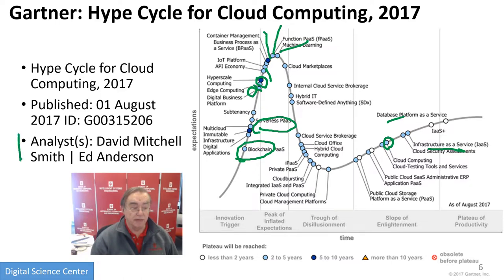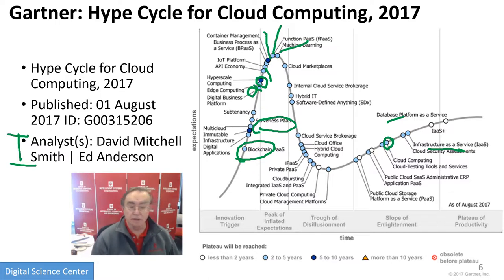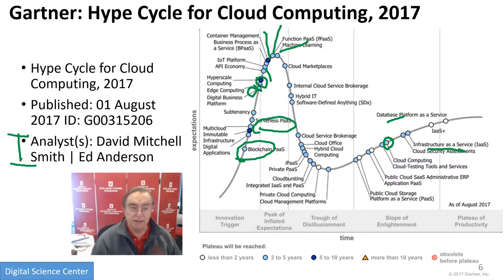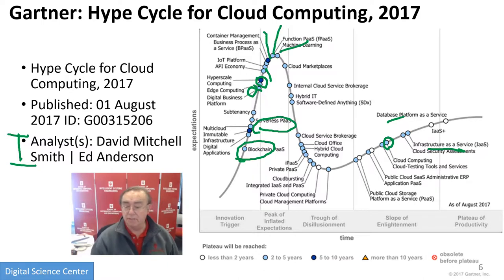I actually noticed these are from different analysts — the emerging technologies one is called Walker. They're published at the same time, and I assume Gartner is aware of the possible inconsistency that cloud computing appears in one hype cycle on the slope of enlightenment and then has just disappeared from another. I think it's slightly irrelevant because the implication is the same: it's a mature technology.